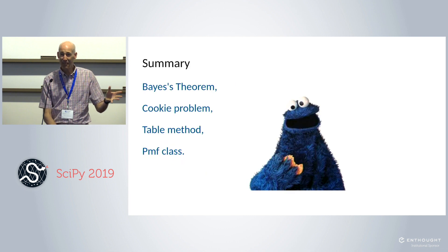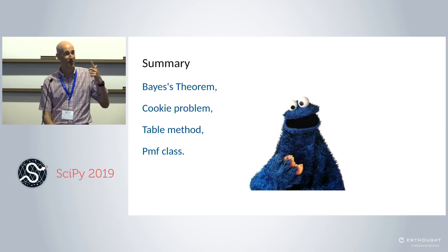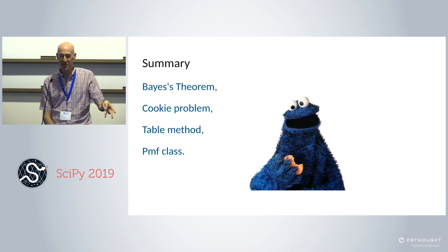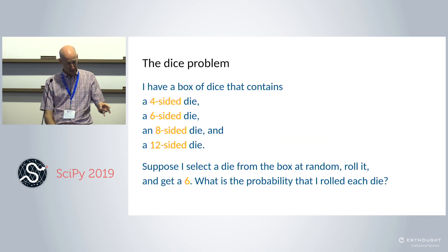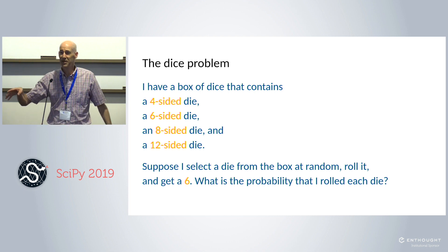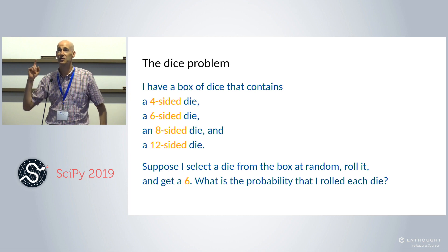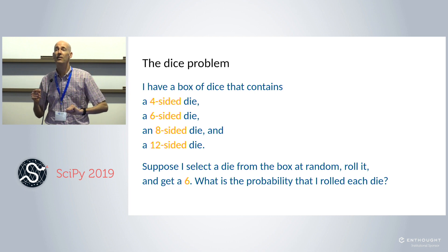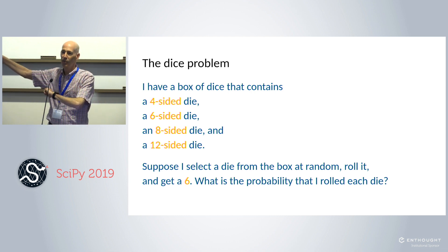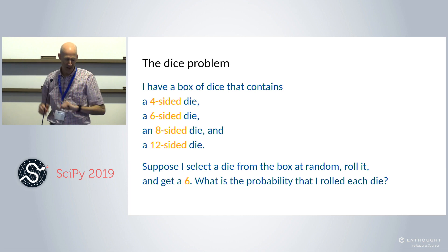To wrap up part one: we've done Bayes' theorem, solved the cookie problem three ways — algebraically, using the table/spreadsheet, and using the PMF class in Python. When we come back we'll start on the dice problem. Let's take ten minutes and resume at five past nine. There are snacks in the hallway.